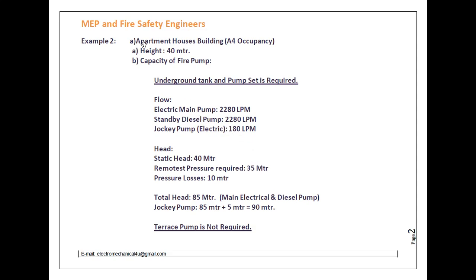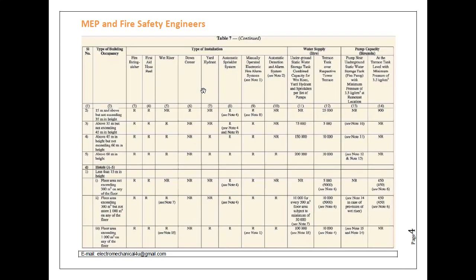For more understanding, I have taken another example with the same apartment occupancy, but the height is changed to 40 meters. When the height is increased, the selection of the pump and systems also changes. Looking at the table, the row 'above 35 meters but not exceeding 45 meters in height' applies to this same occupancy. For the pump near the underground static water tank, we have to refer to Note 10, and the terrace pump is not required.